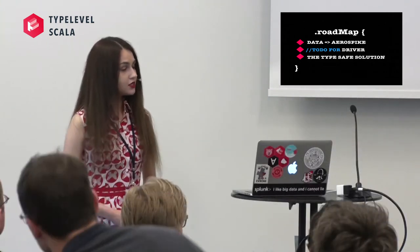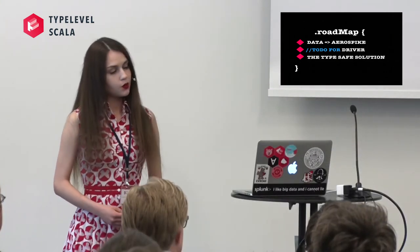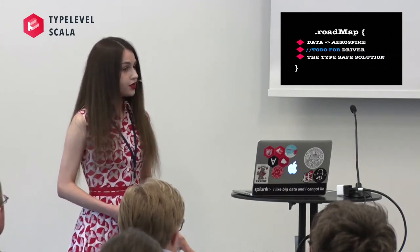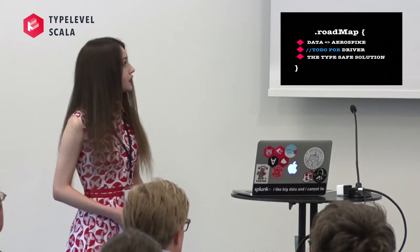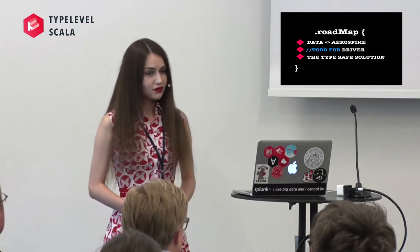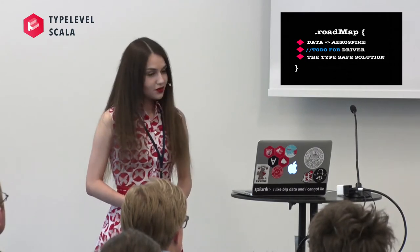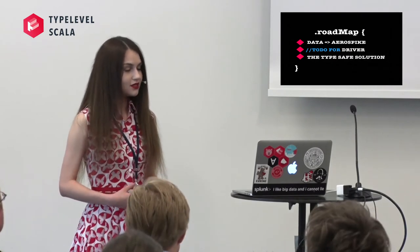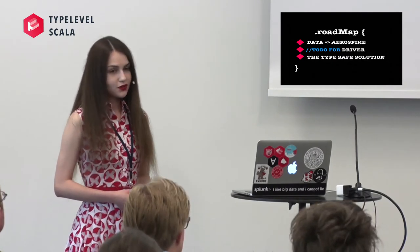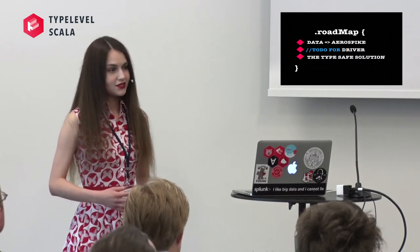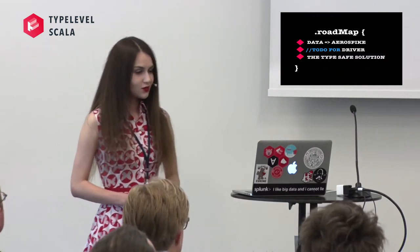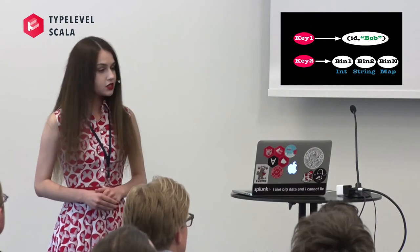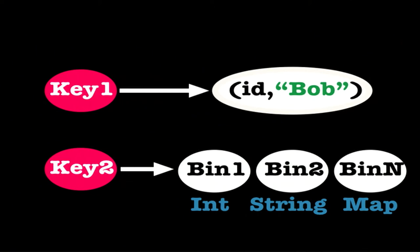Today we will try to solve this problem by writing a small library with Scala macros for a Java driver. As a test I took Aerospike, but this approach can be used for other schemaless storages. The roadmap for today: first I'll tell you about Aerospike and how we store information in it, then I'll explain what I think a schemaless key-value data storage driver has to do and why it's important for applications to operate with types.